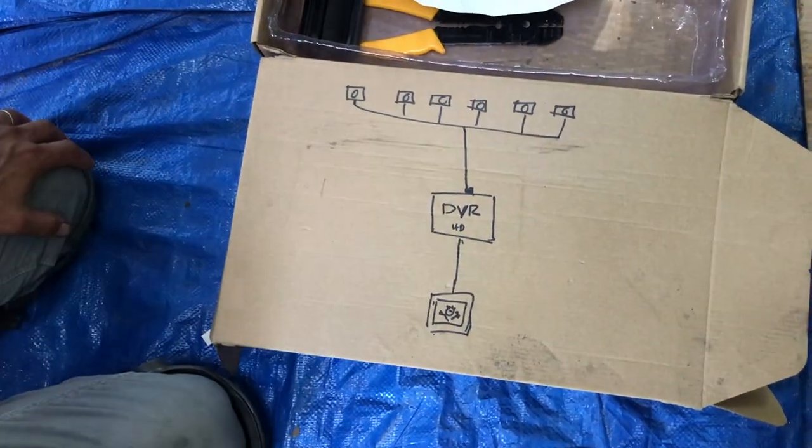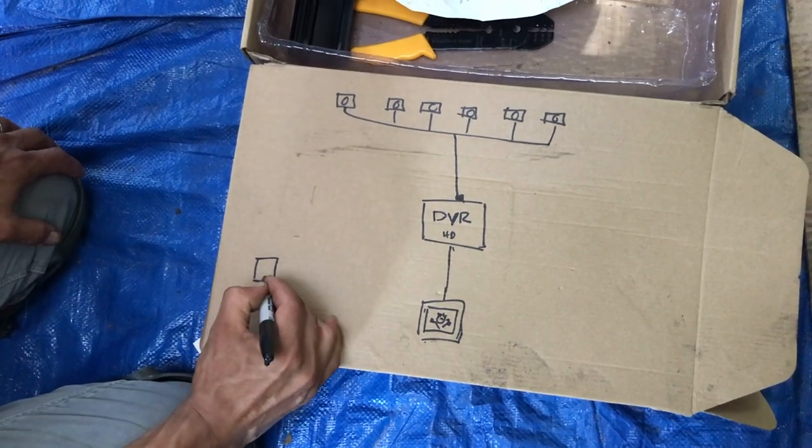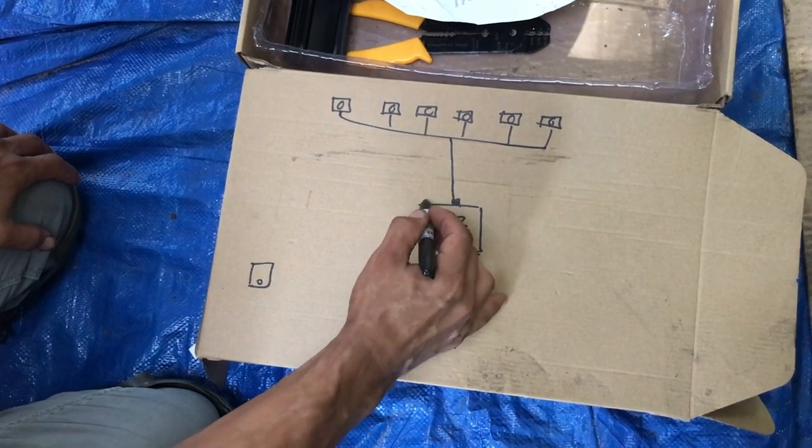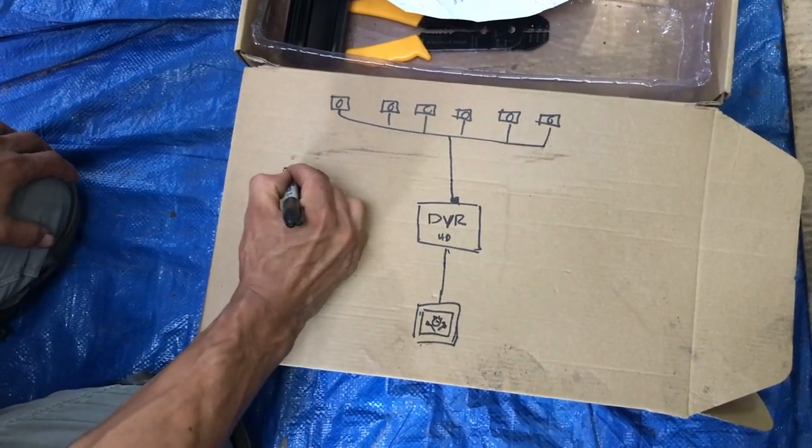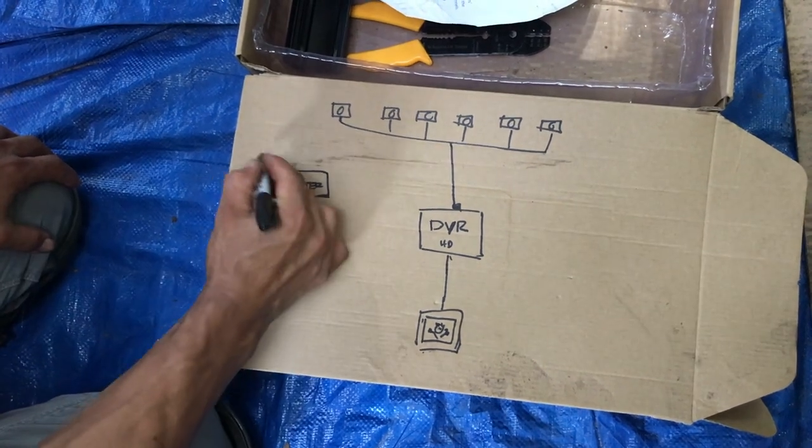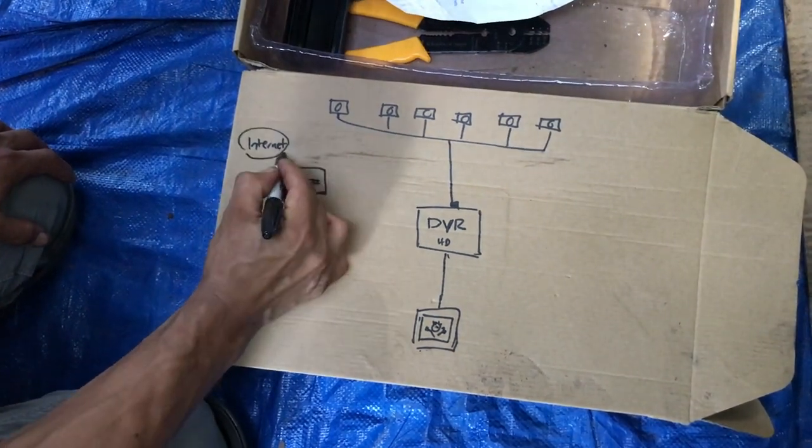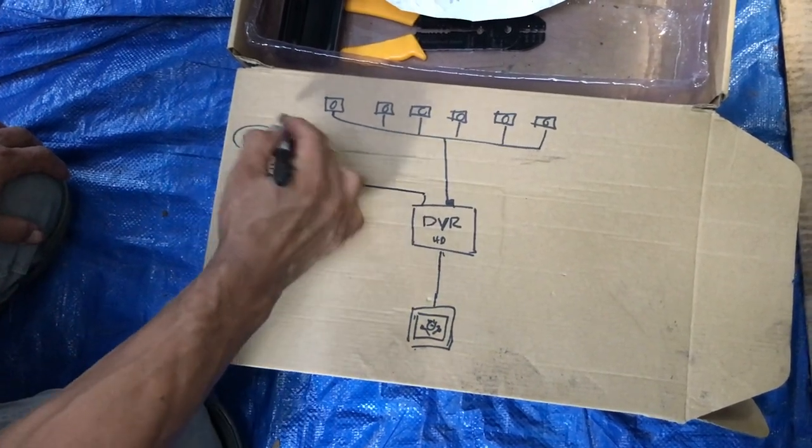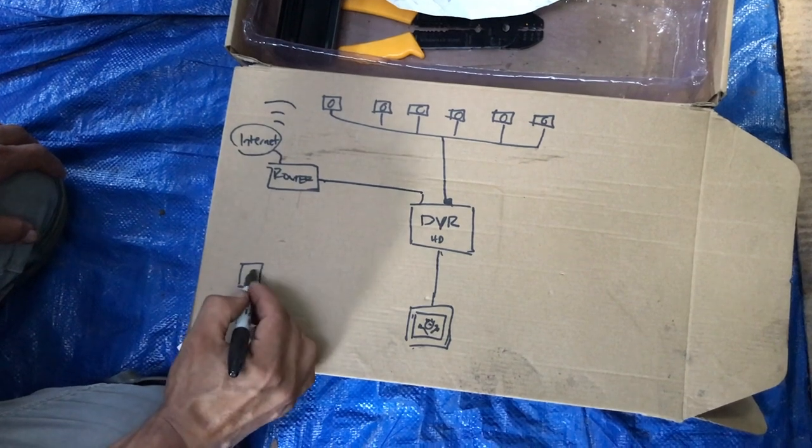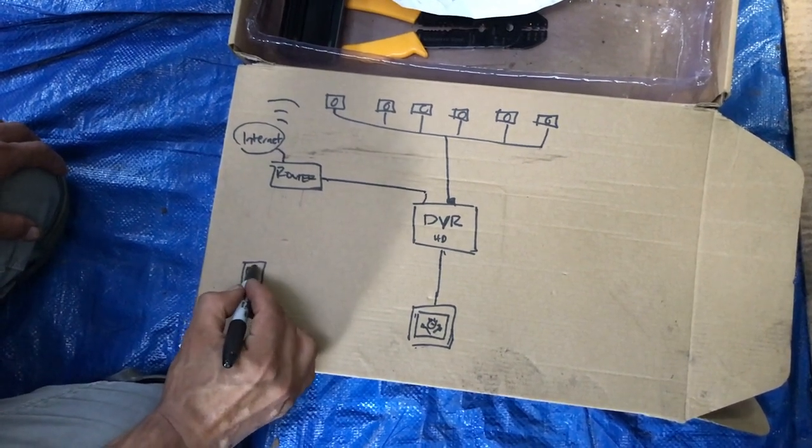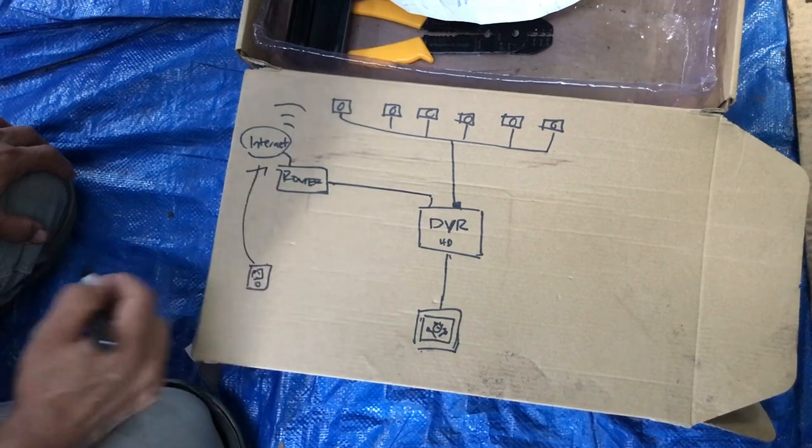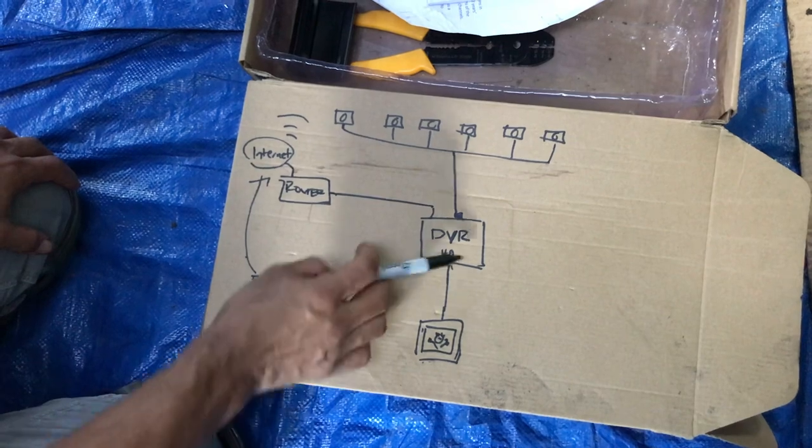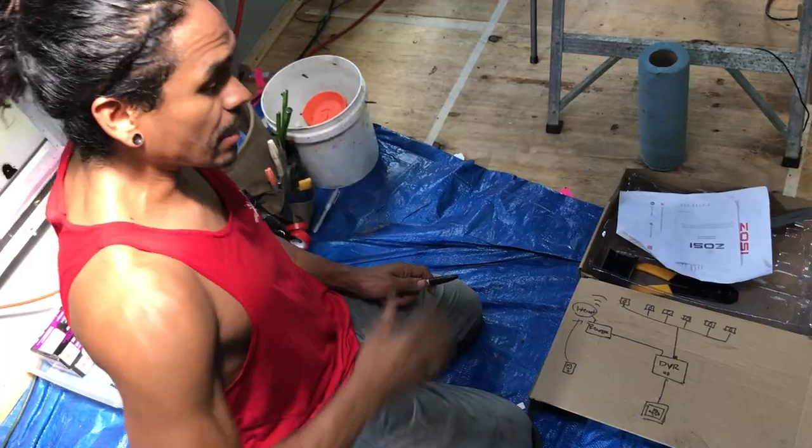Then you want to be able to see it from your phone. What you do is you also have a connection here to a router, and this router is connected to the internet. The DVR connects to the router. When you connect with your phone, once you download the app, you connect to the internet and you can find your device. Then you can see each channel. Everything is 12 volts.